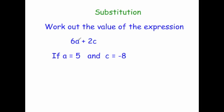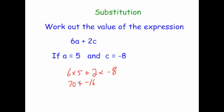Work out the value of the expression 6a plus 2c, if a is equal to 5 and c is equal to negative 8. We do 6 times 5 and add that to 2 times minus 8. Remember BODMAS — we multiply before we add. 6 times 5 is 30, and 2 times minus 8 is minus 16. We've got a plus and a minus directly beside each other: adding a negative is the same as subtracting. So we get 30 take away 16, which is equal to 14.